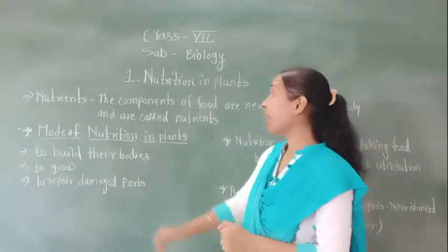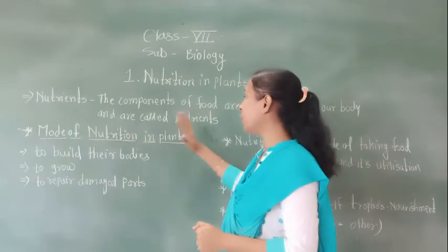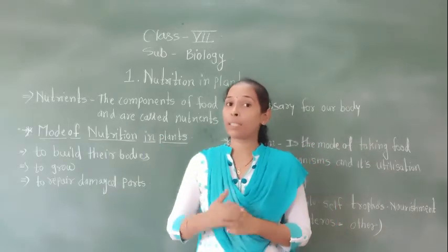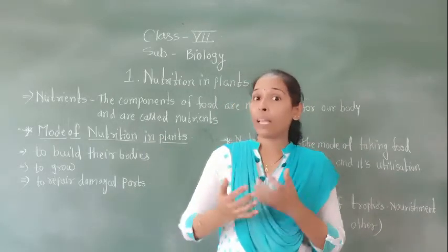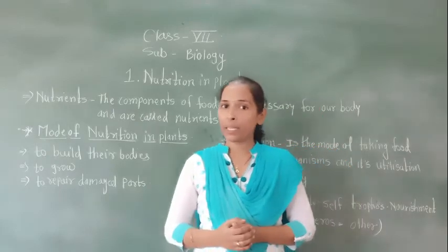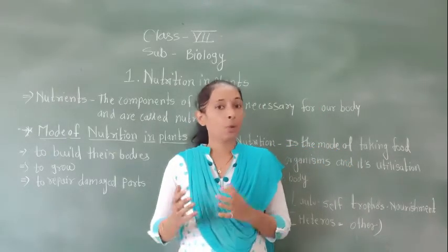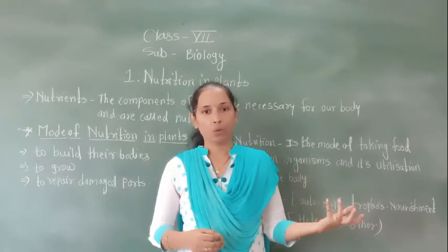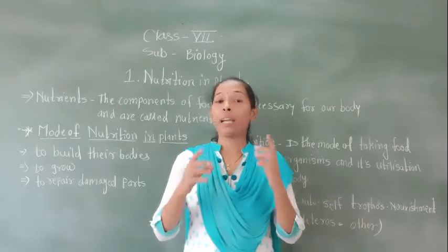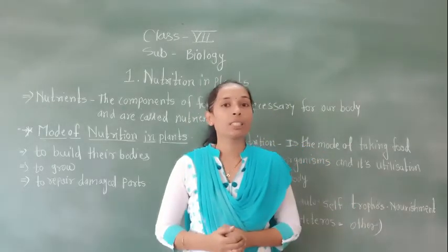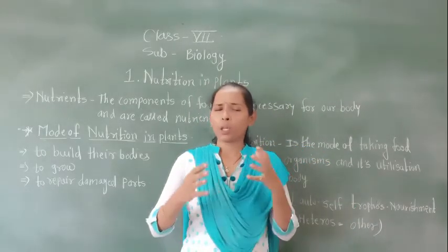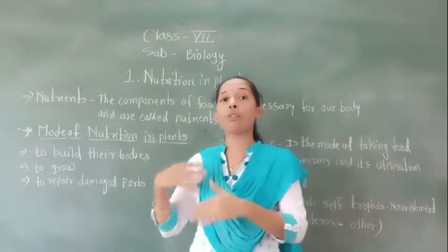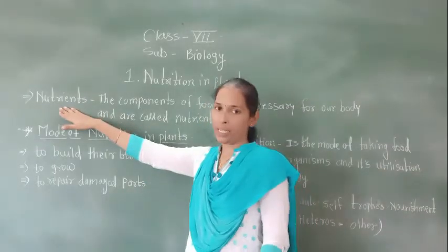Now we will discuss the mode of nutrition in plants. Plants can make their own food, but to make that food, the plants also require some raw materials. The raw materials required are: water, sunlight, chlorophyll, and a very important thing — carbon dioxide. With all these raw materials, the plants can make their own food and fulfill their nutrient needs.